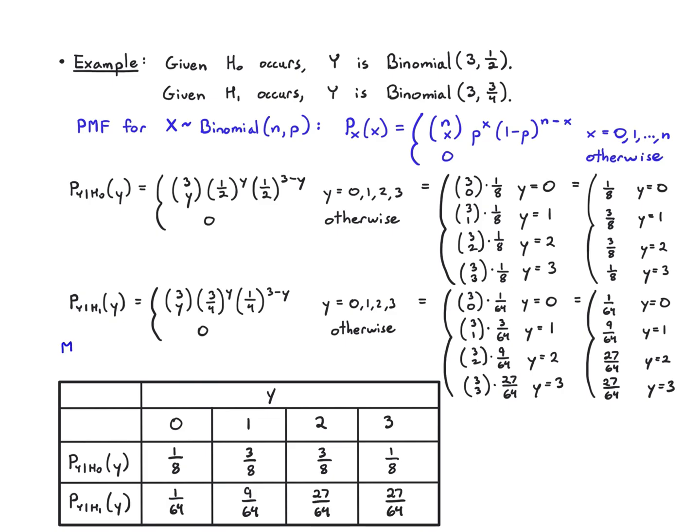I want to figure out what is the ML rule in this case. The ML rule, if you remember, is just take the conditional PMFs and decide the hypothesis with the larger conditional probability at that value. If p of y given H₁ is bigger, pick H₁, otherwise pick H₀. Tie is going to H₁.